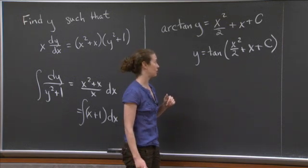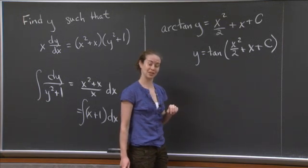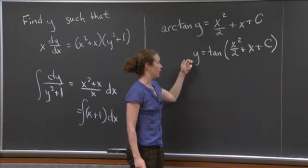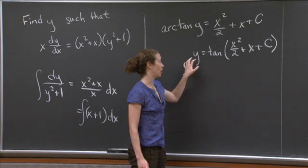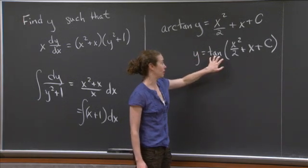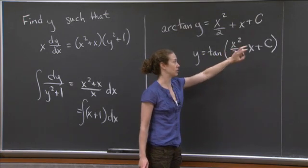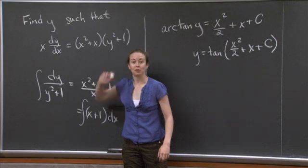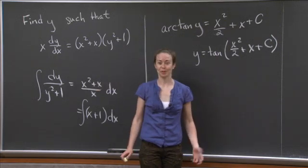Now how do I go about checking to make sure that this works? Well, what I do is actually take the derivative. So you may want to take the derivative of the right-hand side, take dy/dx, evaluate what that is when you have y equals tangent of x squared over 2 plus x plus c, and see if you in fact get the relationship you're supposed to get. But I'll stop there.